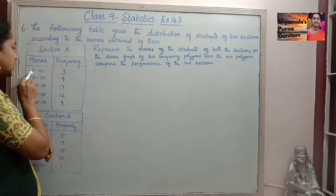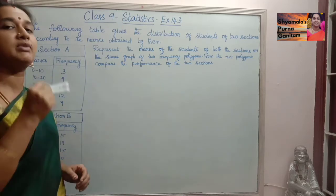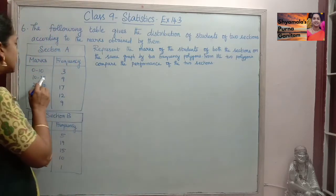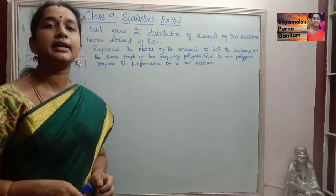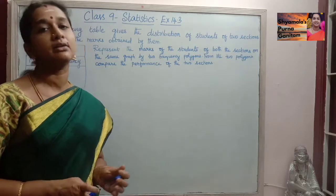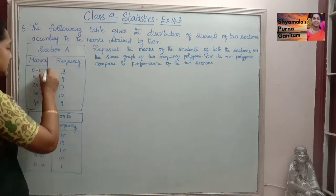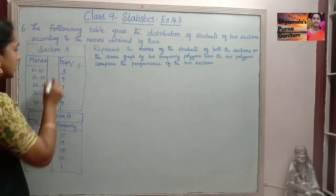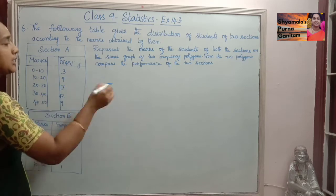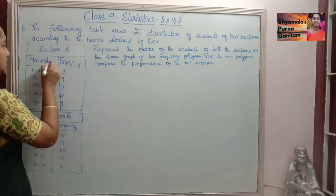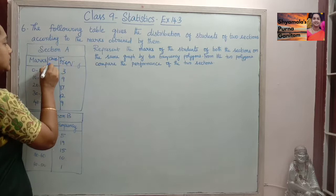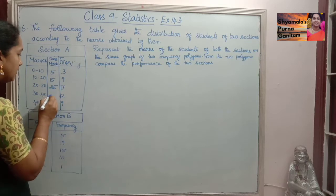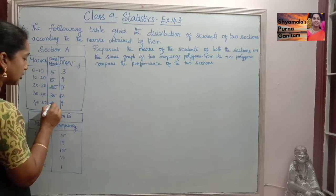For the interval 0 to 10, the upper limit is 10 and lower limit is 0. So 10 plus 0 is 10, divided by 2 gives 5. Similarly, 20 plus 10 is 30, divided by 2 is 15. So we write the class marks as 5, 15, 25, 35, and 45.